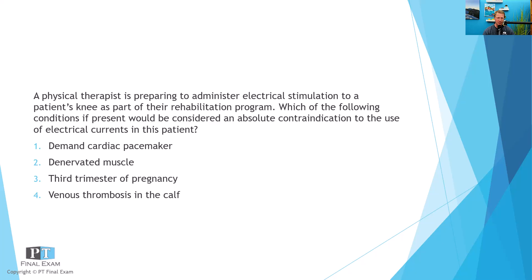The answer choices are: one, demand pacemaker; two, denervated muscle; three, third trimester of pregnancy; or four, venous thrombosis in the calf. Which of these is an absolute contraindication to the use of electrical currents in this patient?